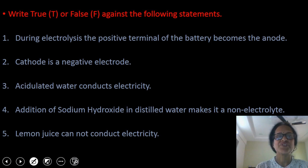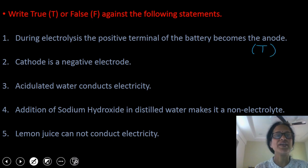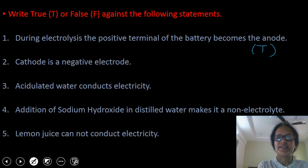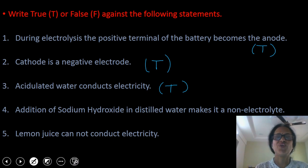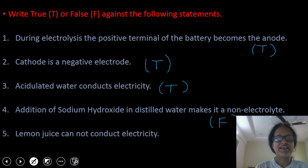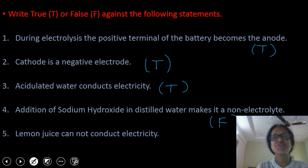You have to write true or false for the following statements. During electrolysis, the positive terminal of the battery becomes anode — yes, this is a correct statement. Cathode is a negative electrode — yes, this is true. Acidulated water conducts electricity — yes, this is also true. Addition of sodium hydroxide in distilled water makes it a non-electrolyte — this is false, because addition of sodium hydroxide, which is a base, makes distilled water an electrolyte. Lemon juice cannot conduct electricity — this is also false, because lemon juice consists of acid and acidic solutions are electrolytes.